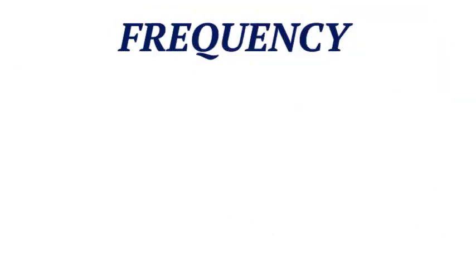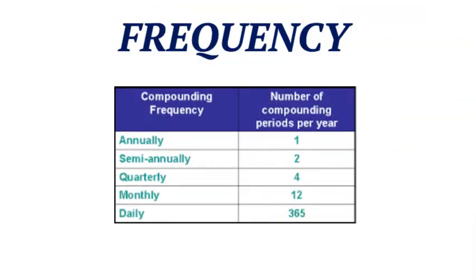When it comes to frequency, the more often the money compounds, the greater the future value will be. You can compound interest annually, which is once a year; semiannually, which is twice a year; quarterly, four times a year; monthly; or daily.